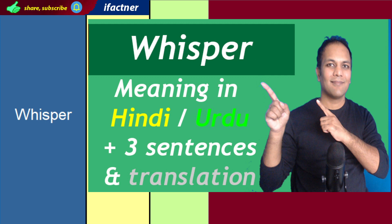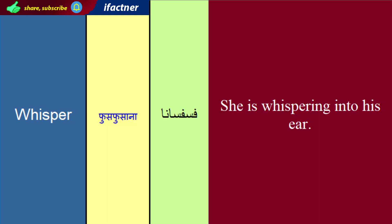Doostoon, word whisper ke spelling hain w-h-i-s-p-e-r, whisper. Aur whisper ka meaning hota hai fasfasaana ya phir kisi ke kaan mein sergooshi kerna, aahistah aahistah baat kerna ke teesre bande ko woh sunain na de. Us cheez ko kehtay hain whisper.